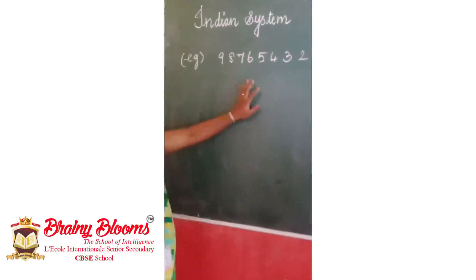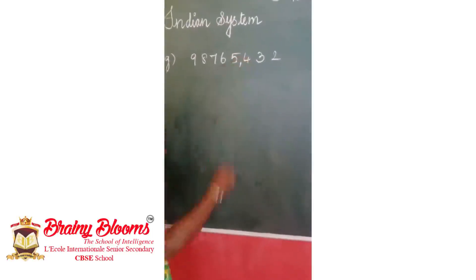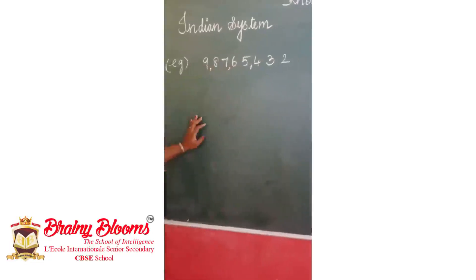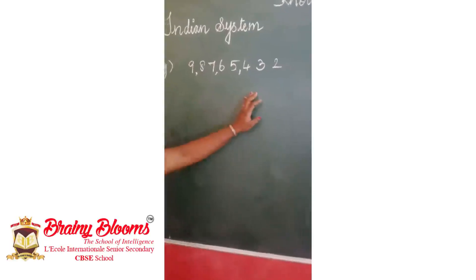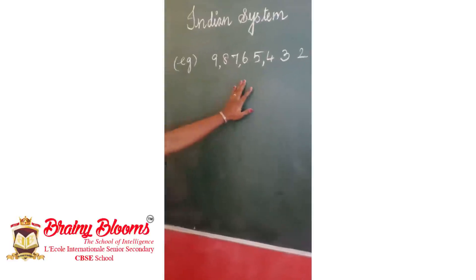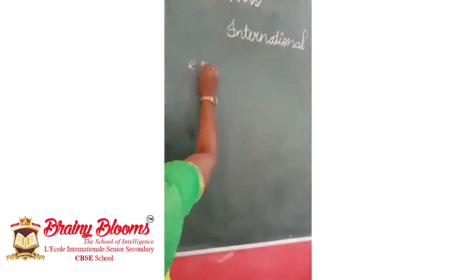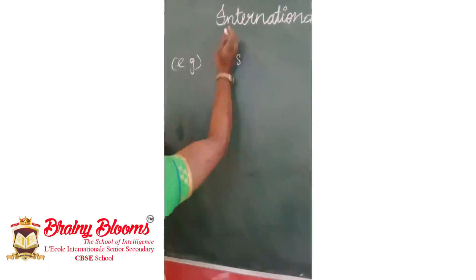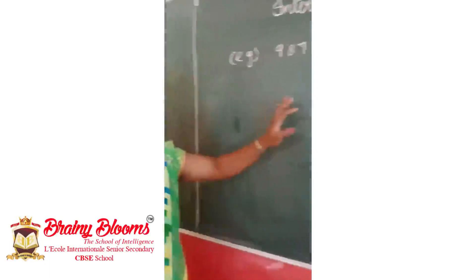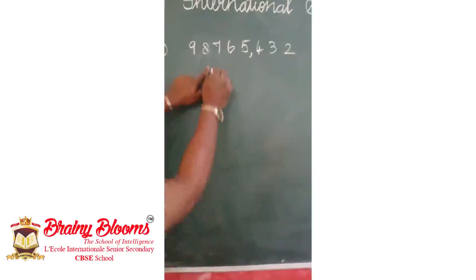In the Indian system, we have to place commas from the right. From the last three digits, you place a comma, followed by two digits, then place a comma again. But in the international system, we place commas from the right after three digits, followed by three digits again.